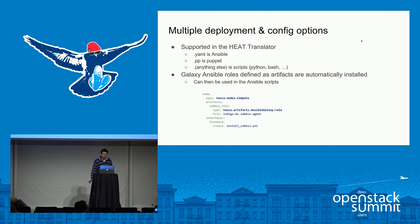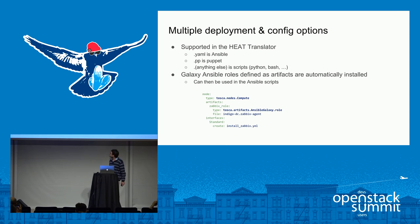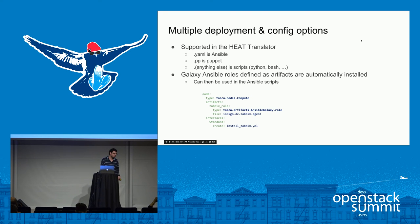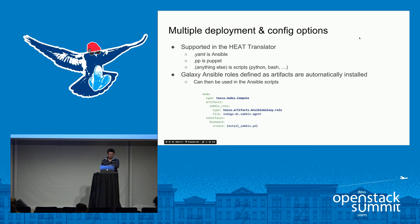Currently there is translation support for several configuration management tools: scripts, Ansible, and Puppet. You can also define artifacts on compute nodes that would be mapped to Galaxy Ansible roles. Instead of embedding your Galaxy Ansible roles inside your image, you can define them as artifacts and they will be installed by the software config underneath. You can then use those Ansible roles — for example, an install Zabbix script.